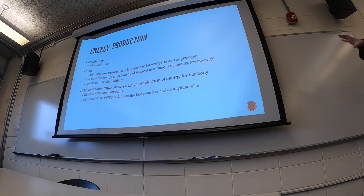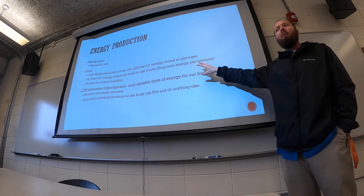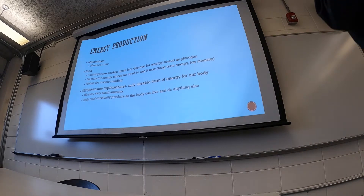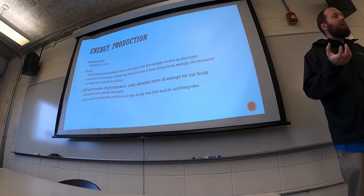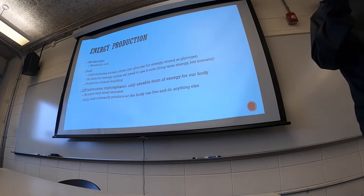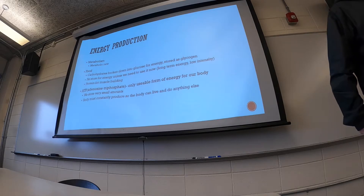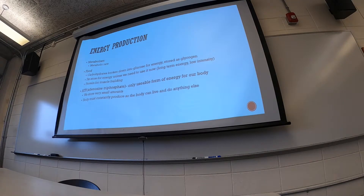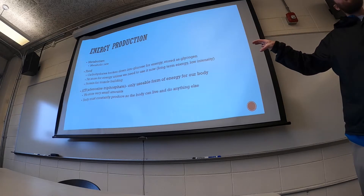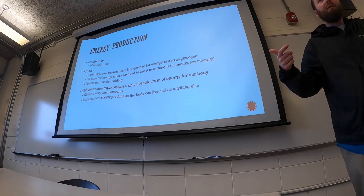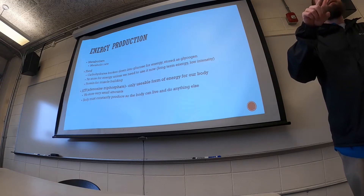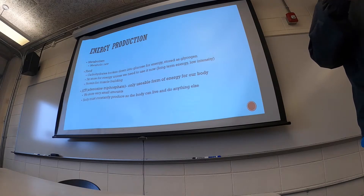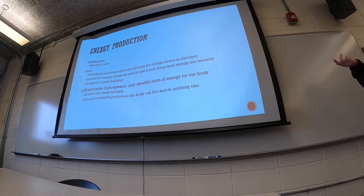We eat carbohydrates, fats, and proteins and our body makes energy from them, but we can't use that energy directly. The only usable form of energy in our body is ATP, or adenosine triphosphate. Your body takes fats, proteins, and carbohydrates and converts them into ATP, which we can then actually utilize. Sugar gives you an energy boost because the way it's processed, we're able to make ATP more quickly from it than from fat.